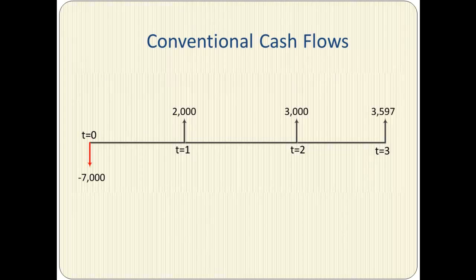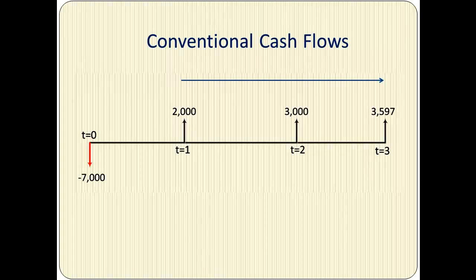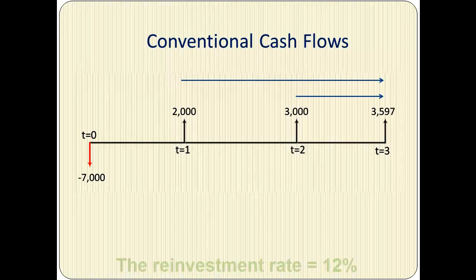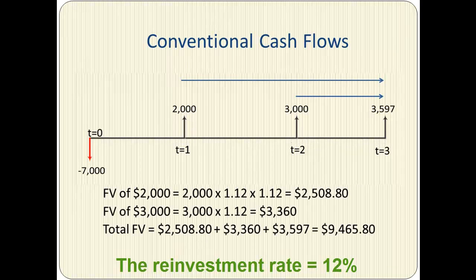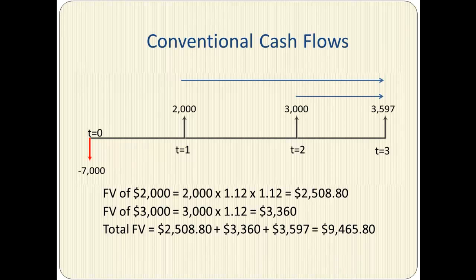To calculate MIRR on the Student edition of the calculator, we need to find the future value of all the inflows or the positive cash flows. We are going to find the future value of $2,000, then the future value of $3,000, and the future value of $3,597 at T equals 3. Adding all the future values together, they come out to $9,465.80.